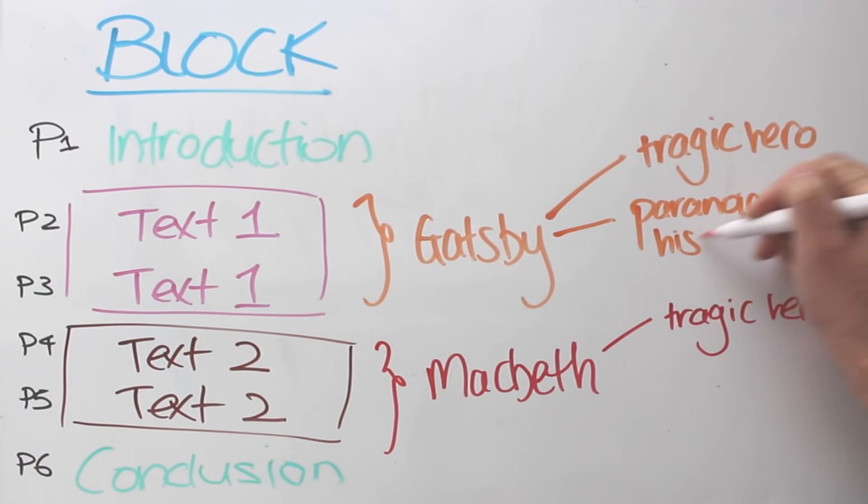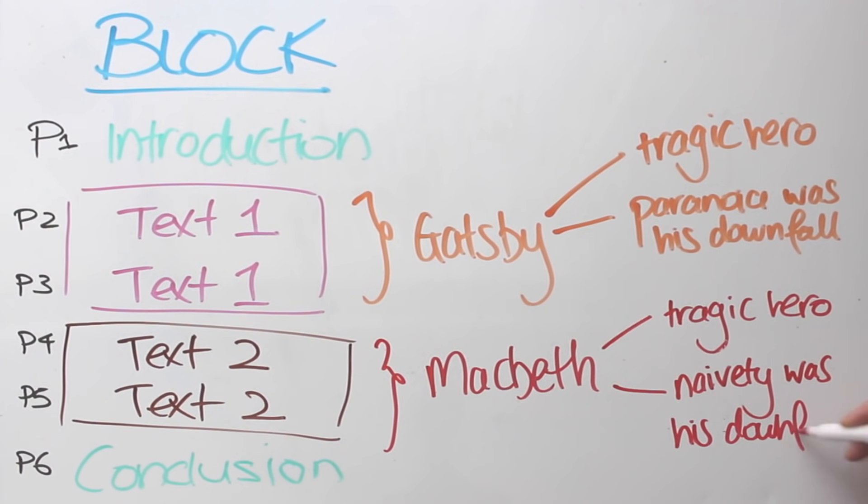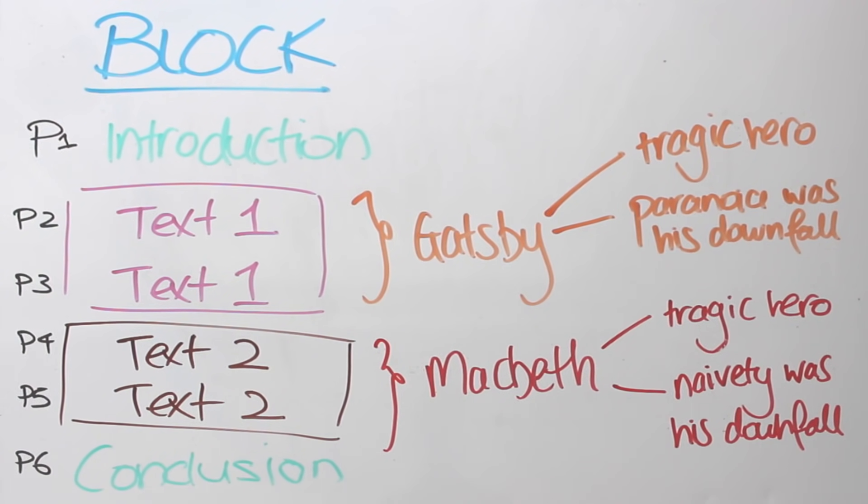Then with paragraph three and five, what you could do is point out some differences. Gatsby ultimately undergoes a downfall because of his naivety. And I know I've written paranoia there. I'm so sorry. I got confused between the two texts. So try not to do what I did where you accidentally switch up the two. Paranoia should be under Macbeth and naivety is under Gatsby. So this is what a block structure would look like.